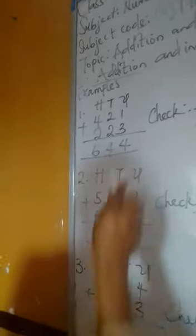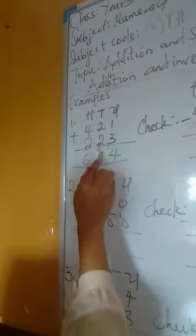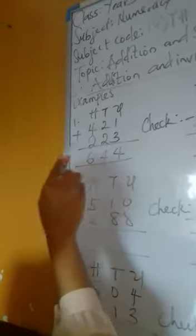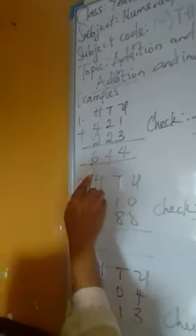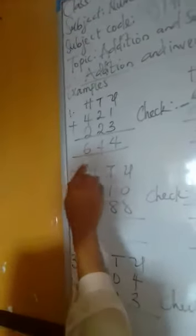I have 421 plus 223. 1 plus 3 is 4, 2 plus 2 is 4, 4 plus 2 is 6. So my answer here is 644.